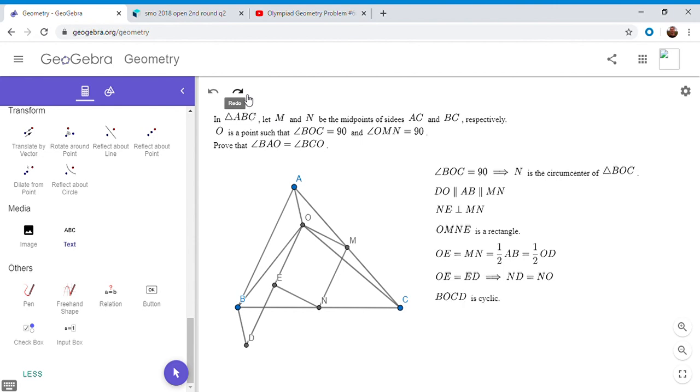And now we're almost there, because by a simple angle chase, we can get the problem statement. So angle BAO is equal to angle BDO, because BAOD is a parallelogram, and BDO is equal to BCO, since BOCD is cyclic.